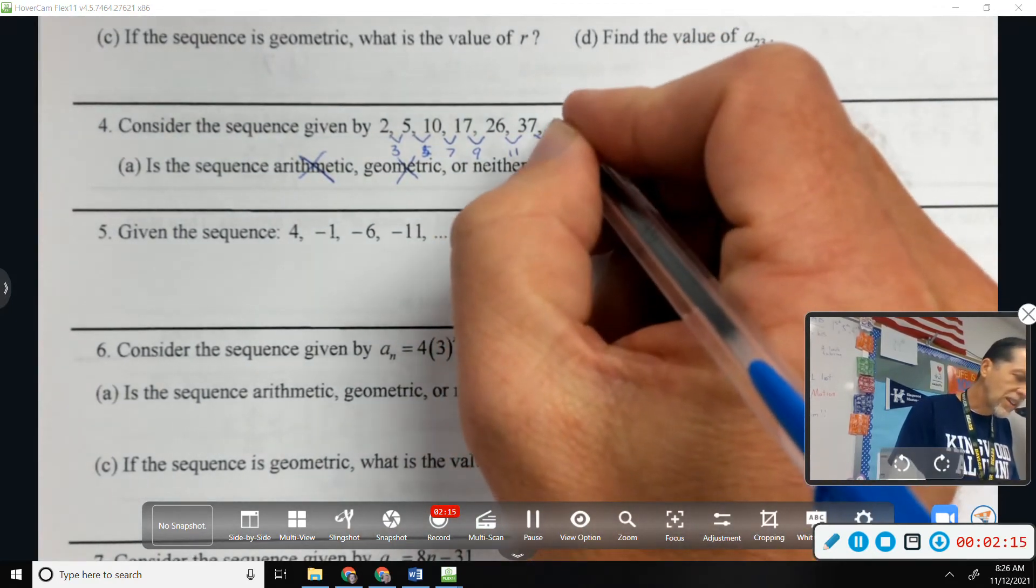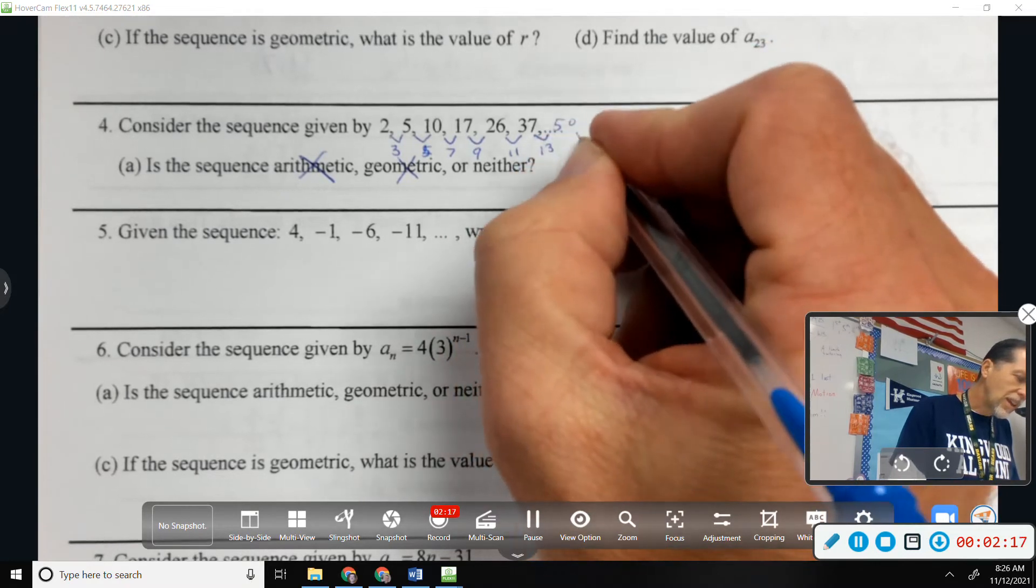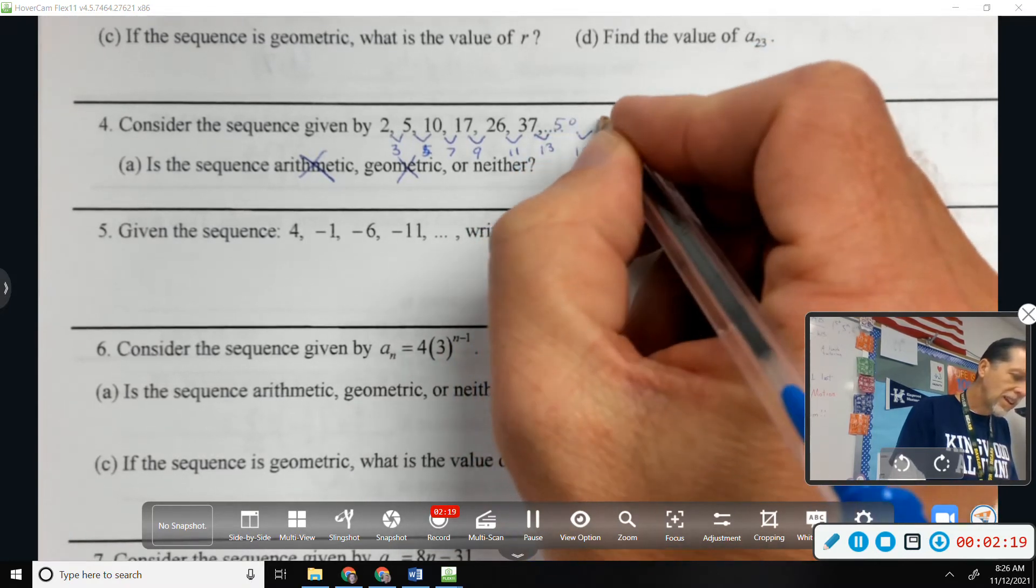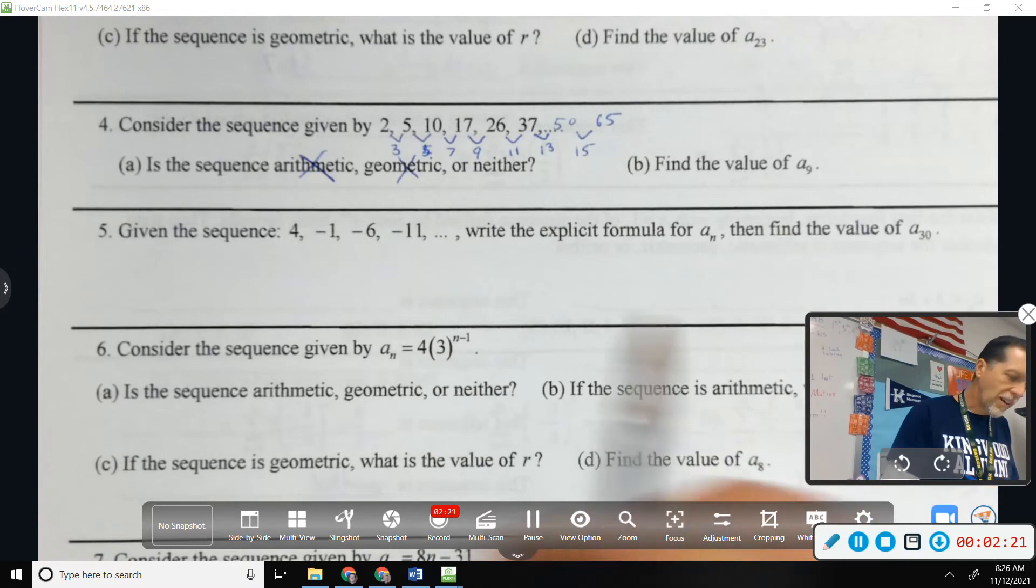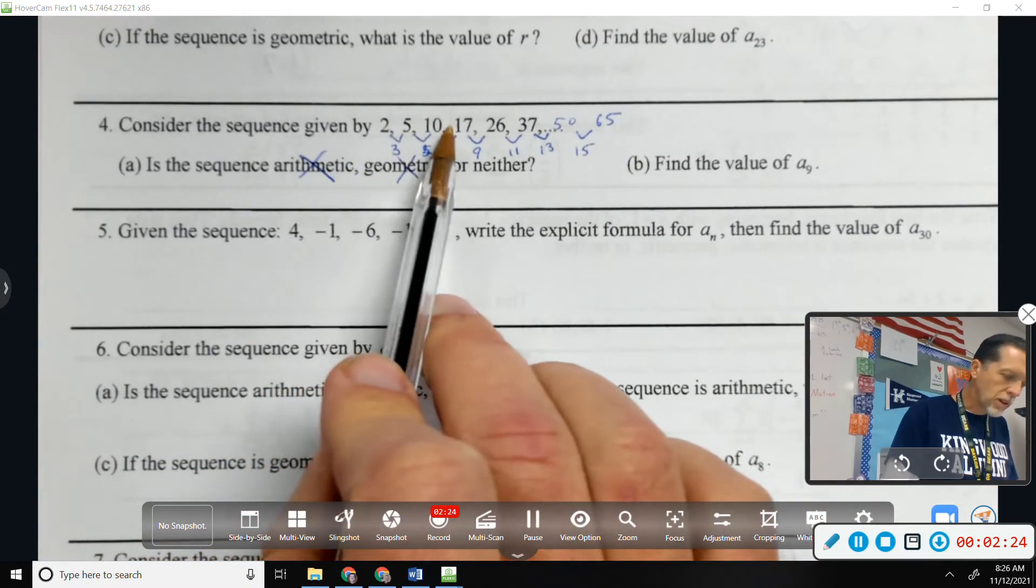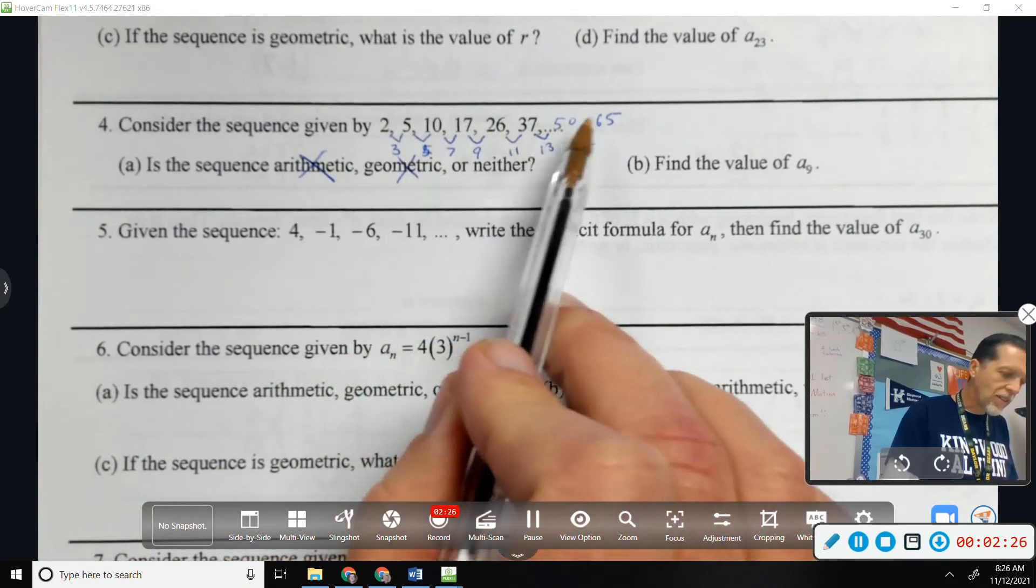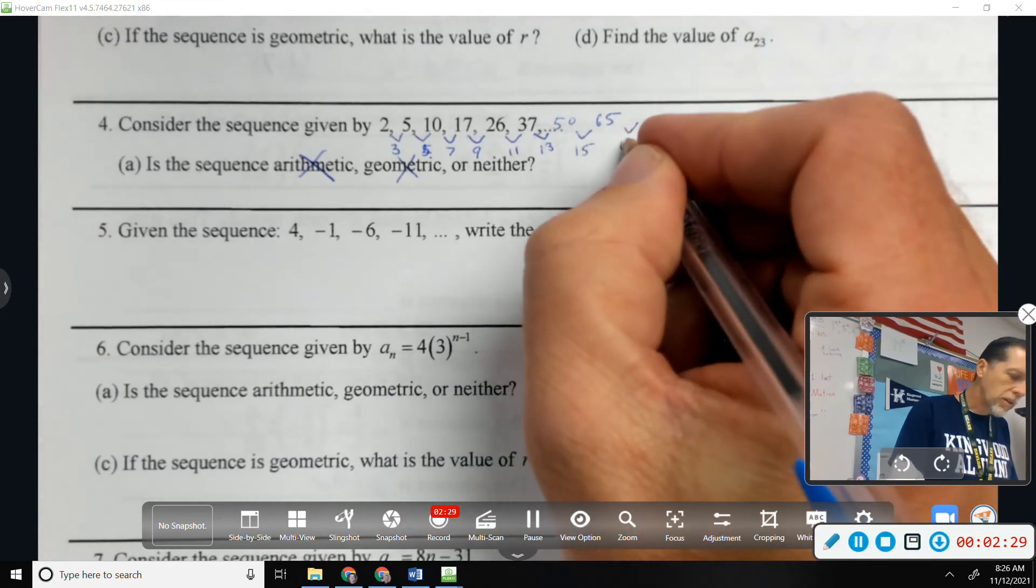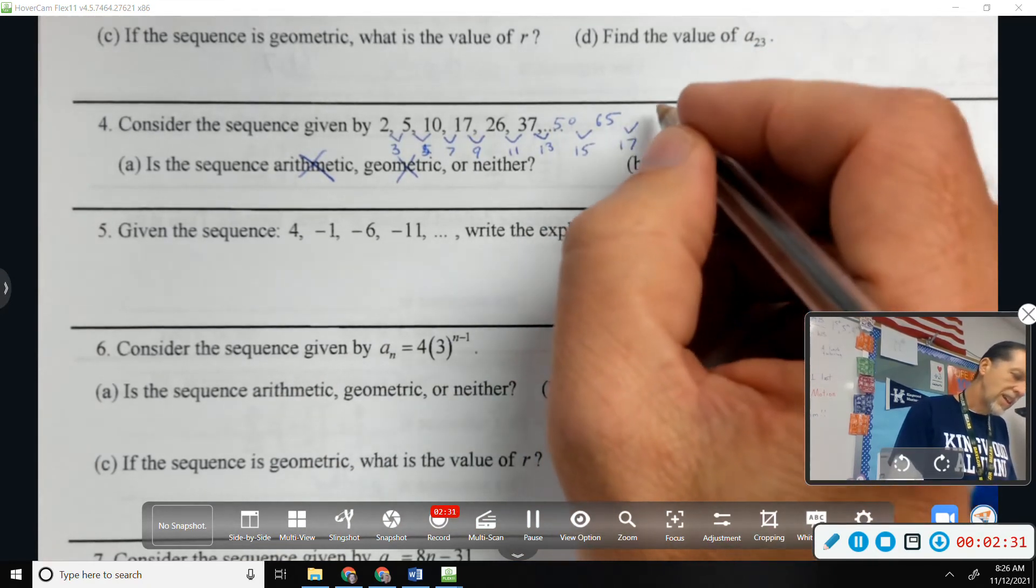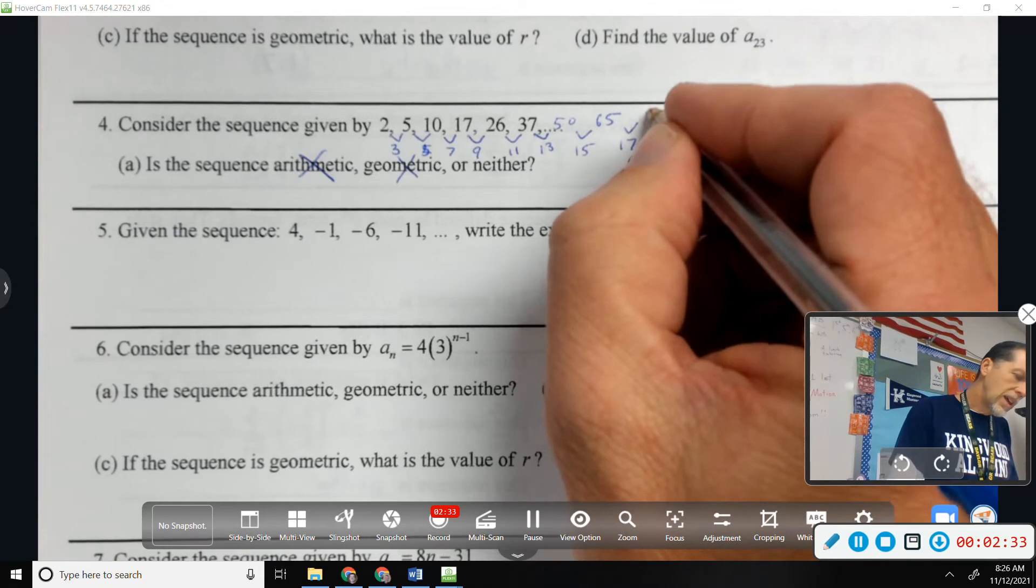Let's add 13, that would get us to 50. Then let's add 15, that would get us to 65. What term are we on here? One, two, three, four, five, six, seven, eight. One more. So we'll add 17. And that would be 82.